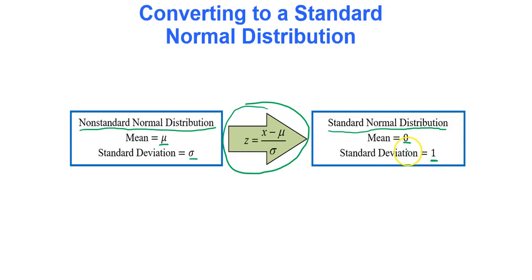So in other words, the standard normal distribution comes from applying the z-score formulas to data values that are normally distributed. Standard normal means mean of zero, standard deviation of one.